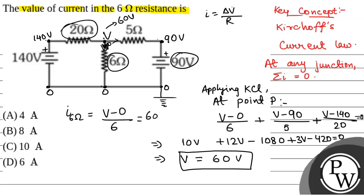So, that will be 60 by 6, which is equal to 10A. So, the current in 6 ohm resistor will be 10A, which is option C. Hope you all understood it well. Best of luck.